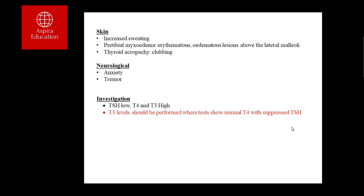In hyperthyroidism, very high T3 and T4 negatively inhibit the hypothalamic-pituitary axis, causing low TSH. If a patient has symptoms suggestive of hyperthyroidism but T4 appears normal with a low TSH, a T3 level should be checked, as T3 thyrotoxicosis can occur where only T3 is elevated. To investigate the aetiology, thyroid autoantibodies and isotope scanning are requested.